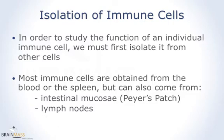This section will discuss the isolation of immune cells. In order to adequately study the function of a given immune cell type, we must be able to isolate that cell type from other extraneous cells. Most immune cells used in research are obtained either from the blood or the spleen. There are immune cells found in other organs, such as the Peyer's patches of the intestine.